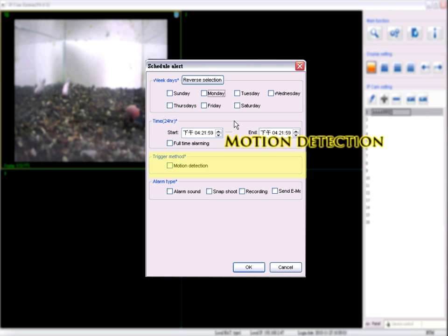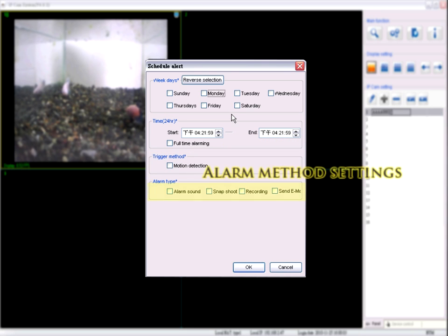Motion detection is adjustable. Alarm method settings include: alarm sound, snapshot, recording, and send email. Need to set up email account.